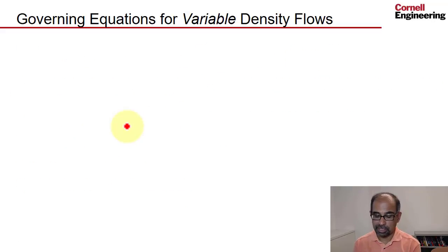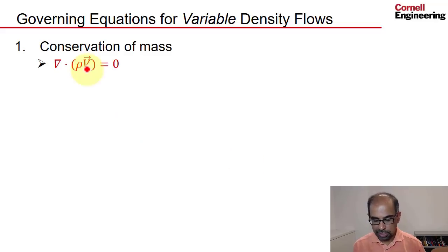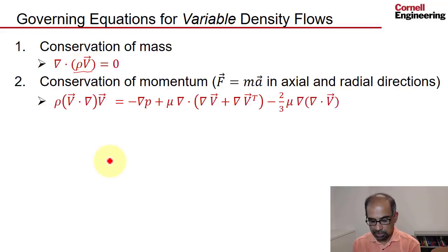That changes when we go to variable density flows. So let's see what happens there. Conservation of mass looks like that. So now you have del dot rho v equals zero rather than del dot v, because I can't take rho out as a constant. So that's different, and conservation of momentum looks very similar.